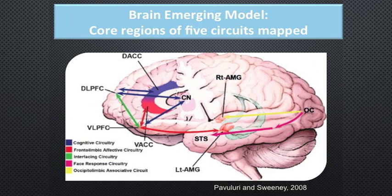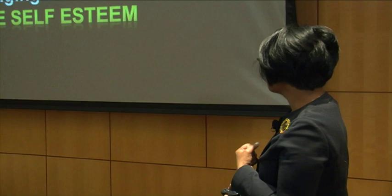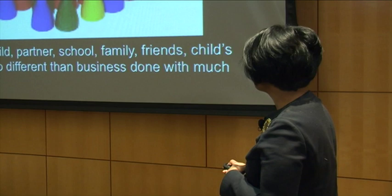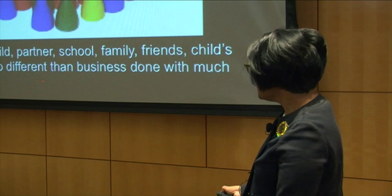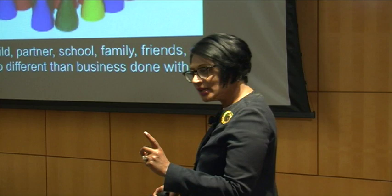Now, I showed you about dynamics — they are very important. The brain and environmental training begin with bringing the best in the child. The most important thing is working with the self-esteem of the child, bringing out the very best they have within themselves. Nature and nurture come together here — the brain and the people. You have to manage the children, the partners, the school, family, friends, peers, and siblings. It's no different than business done with much love.